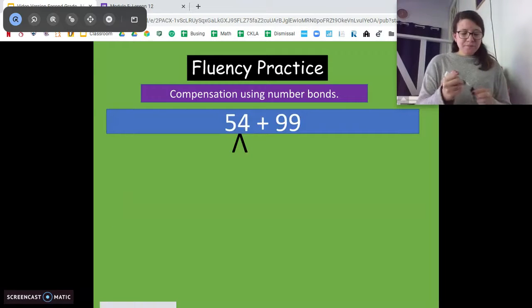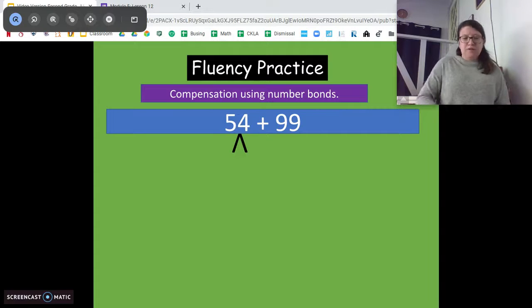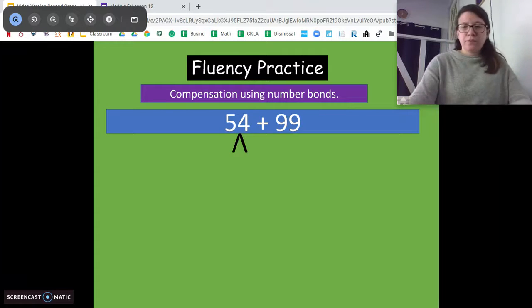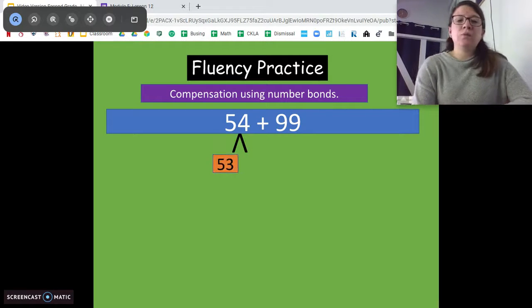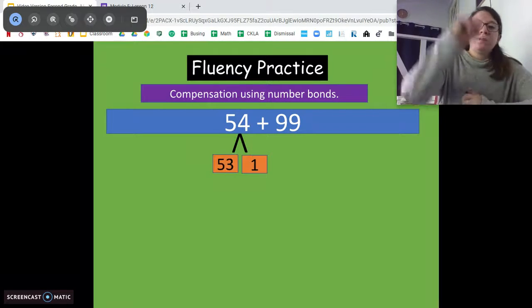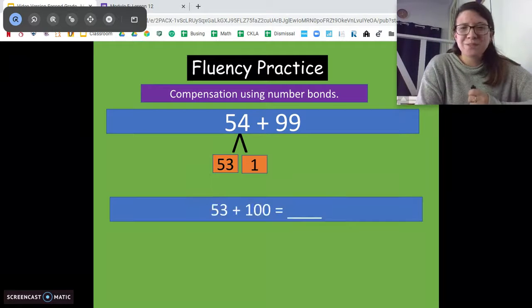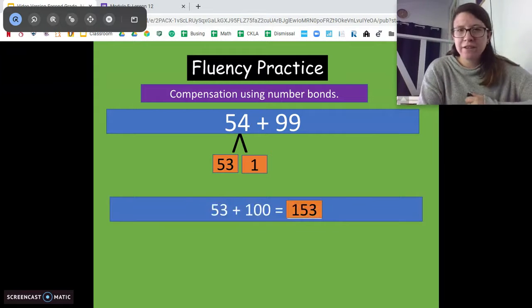Alright, let's try another one. 54 plus 99. Go ahead and solve. You can use that crossing off strategy if that works for you. Good. So we're gonna take one out. We get 53. 100. 99 plus 1 is 100. Plus that extra 53. 153.